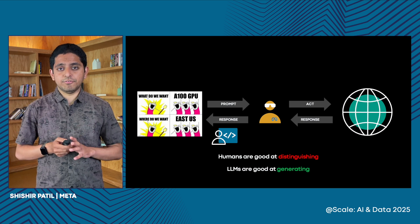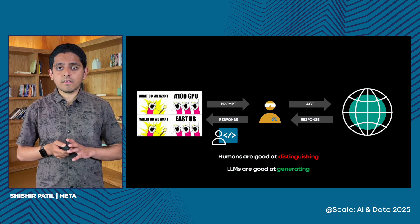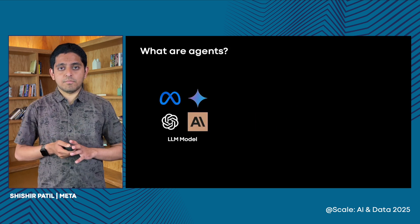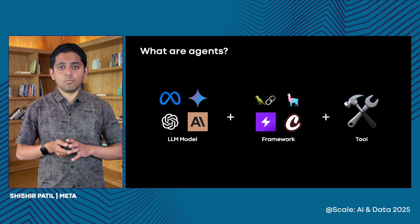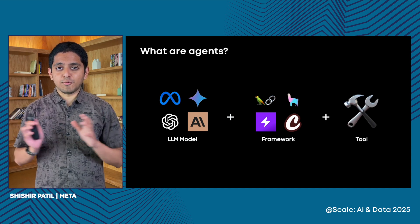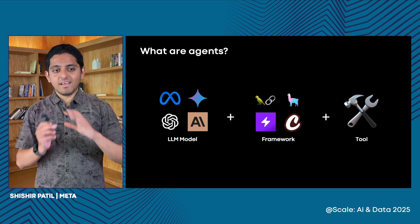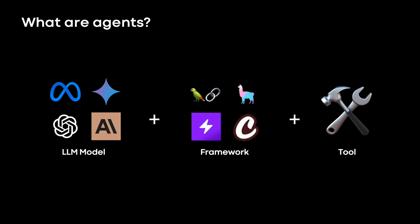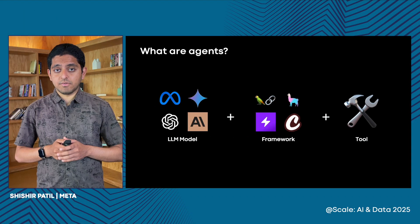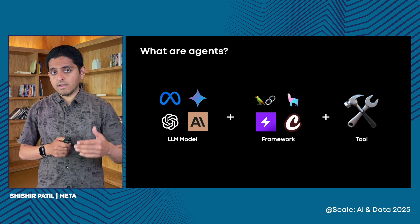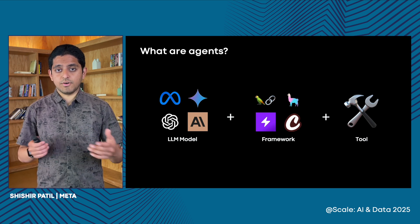So this is the agentic future that we envision. Let's go one step down and try to understand what agents are. It's not lost on me that almost everyone seems to have a definition for agents, but I will give you mine. For me, agents include three components. The first is the LLM model itself. The second is the framework, which orchestrates the LLM model along with the tools available to the agent. The framework also maintains state, takes care of fault tolerance, and so on.